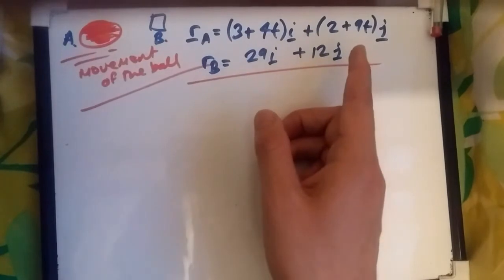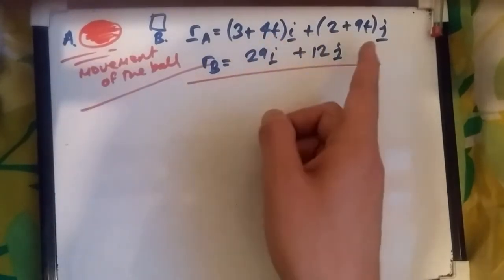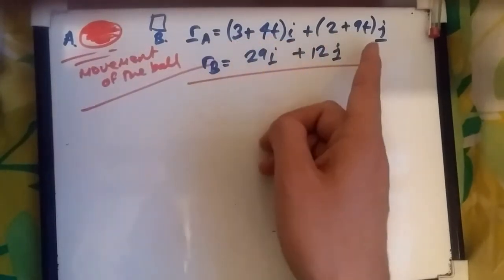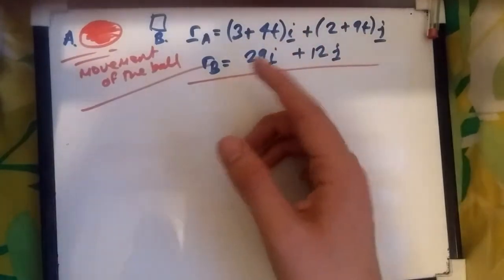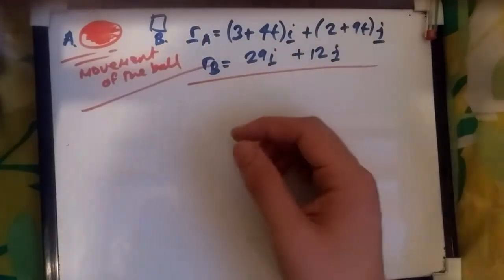So if it was at time zero at a starting point, t would be zero and it would be at 3i plus 2j. If it was at another time, well this would be the equation to define it.